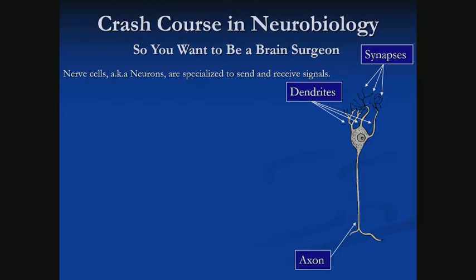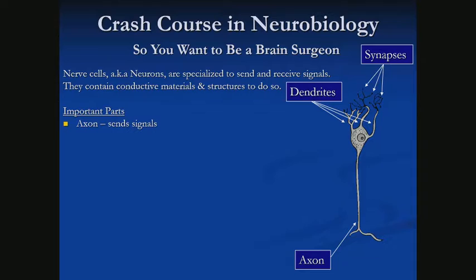You probably aren't an expert either, but that's okay. Our brain is made up of neurons, and they are networked together. We have a ton of them — we'll show some rough numbers in the next slide. For our concerns, the important parts of a neuron are the axon.